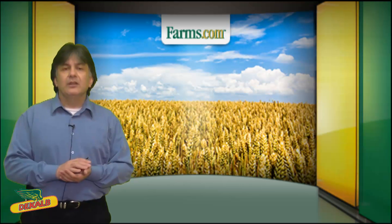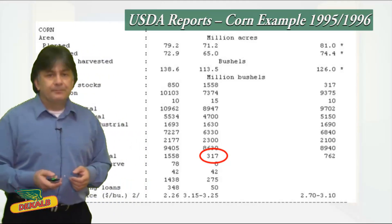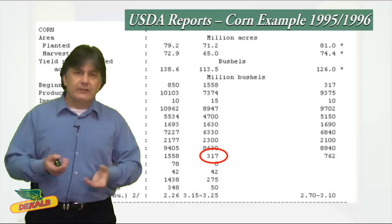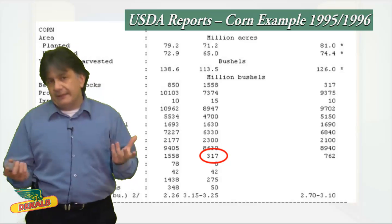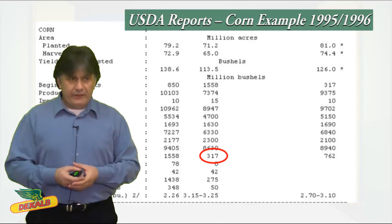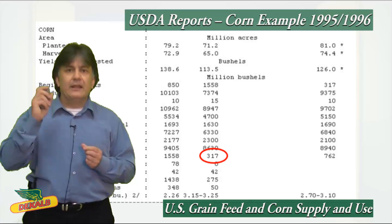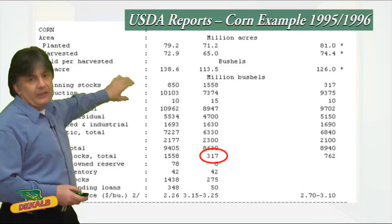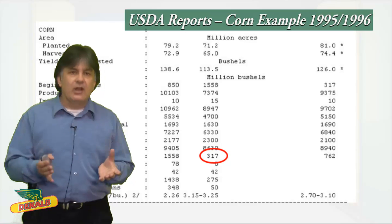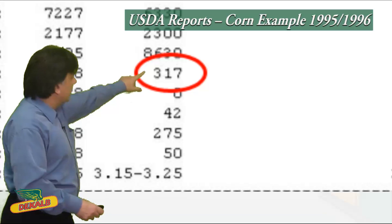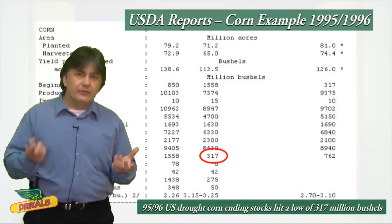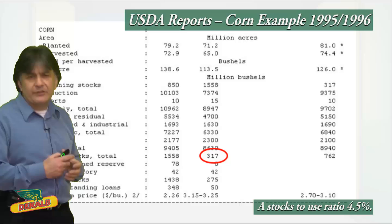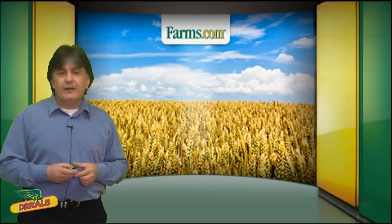Let's look at an example using corn. This is the USDA balance sheet. To find it, click on the particular month and year you're looking for, then navigate to the US corn supply and use page. The key number to focus on is ending stocks. In the 1995-96 US drought year, corn ending stocks fell as low as 317 million bushels — a stocks-to-use ratio of just 4.5% — and corn futures peaked at $5.45 that year.